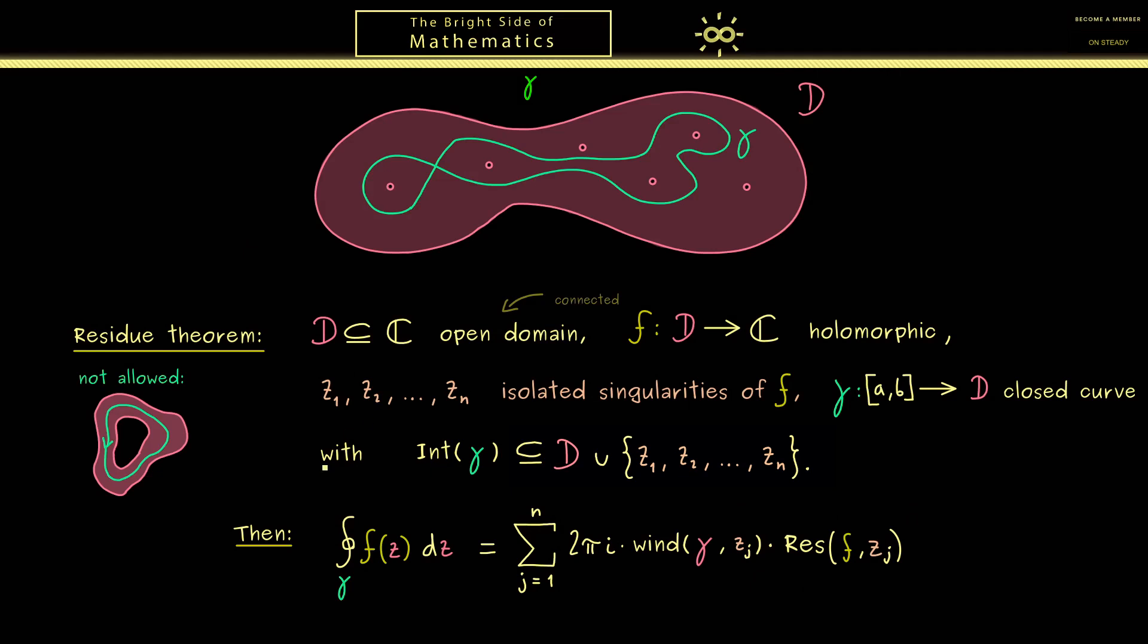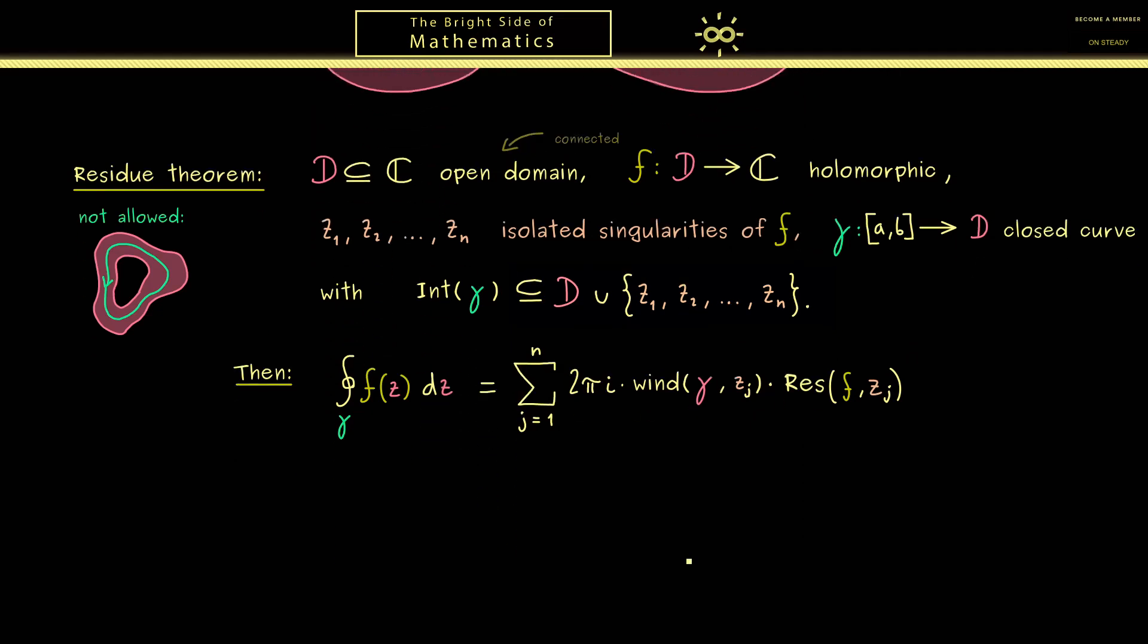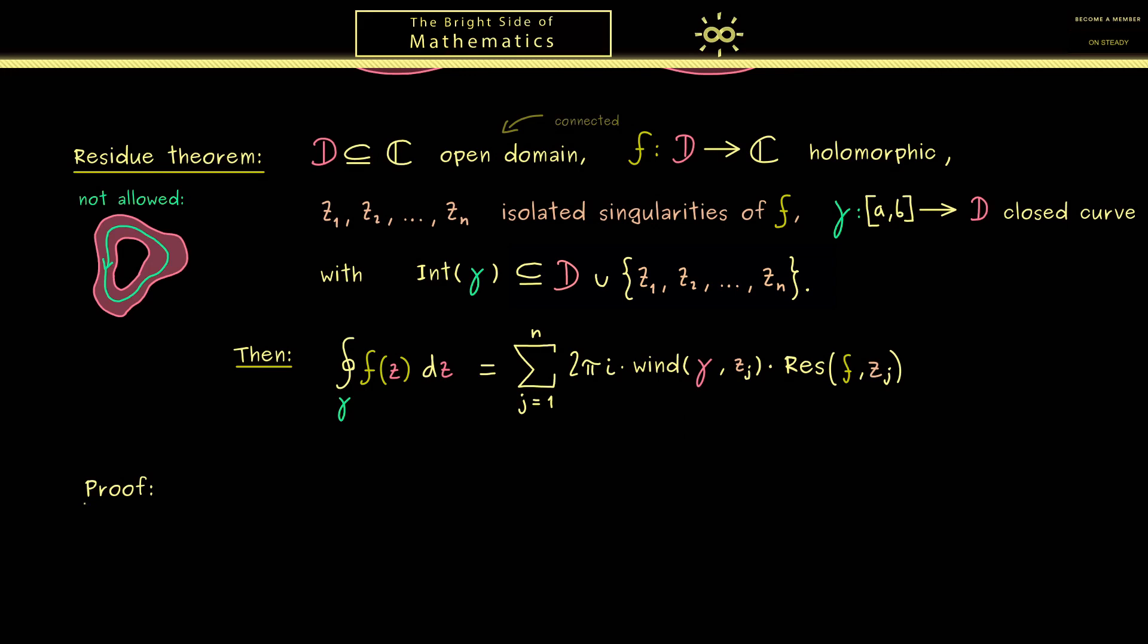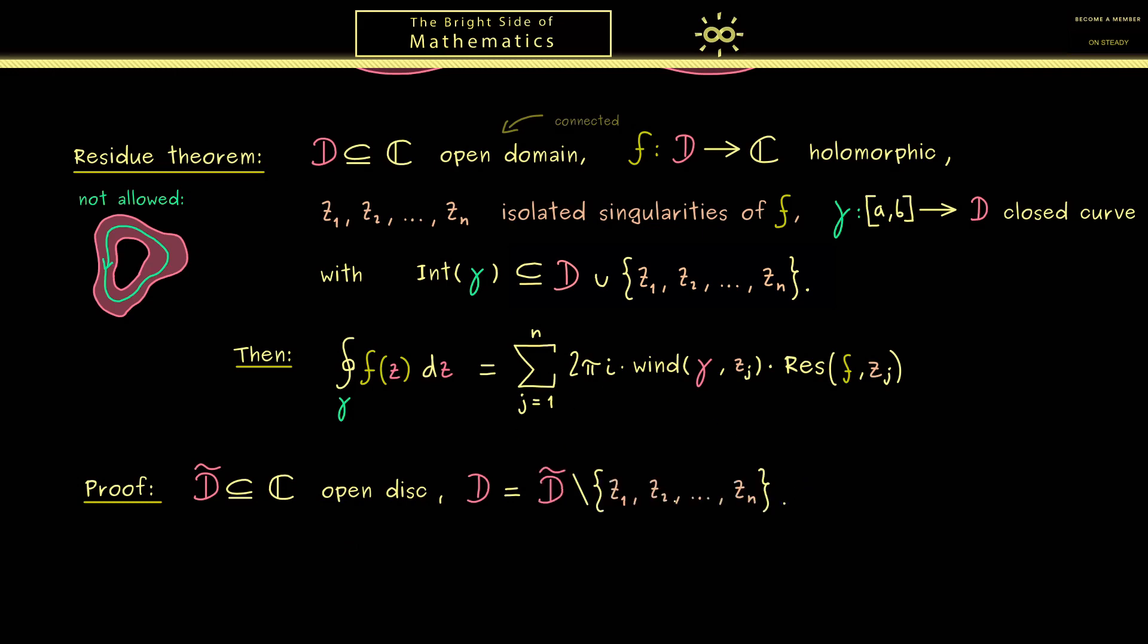And indeed in order to prove this statement here we can use Cauchy's theorem. And as promised let's keep the proof simple. So therefore let's assume that our open domain D is an open disk in C. Or more concretely the open disk should be called D tilde. Because then our D is given by D tilde without the singularities. So you see we have a very concrete domain here. So for example it could look like this and there we have our singularities inside. And now a simple curve gamma could look like this. Please note there the condition that the interior is completely in D tilde here is always fulfilled.